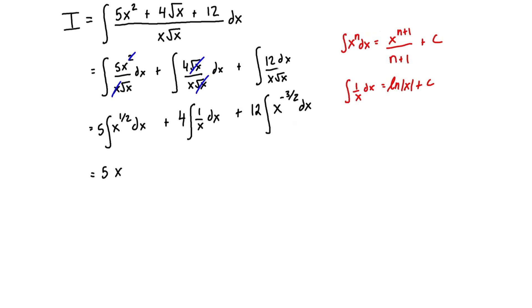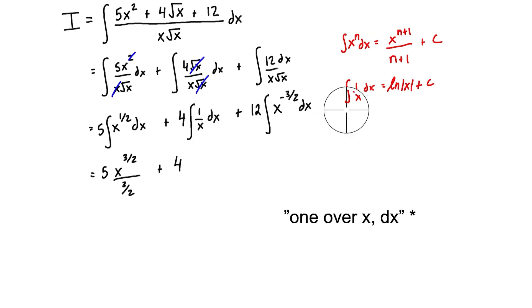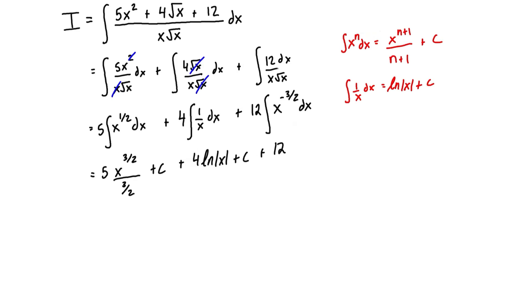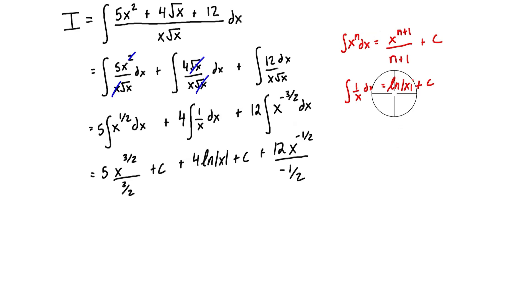The first term gives us 5 times x^(1/2 + 1) over (1/2 + 1), which is 5 times x^(3/2) over (3/2). The second term: since we have the integral of 1/x dx, we substitute to get 4 times ln|x| plus C. The third term: with n = -3/2, n+1 = -1/2, so we get 12 times x^(-1/2) over (-1/2), also plus C.